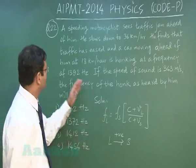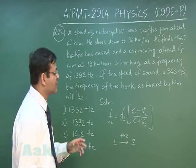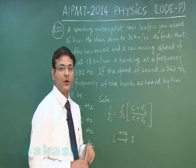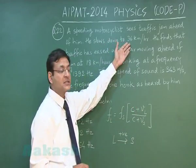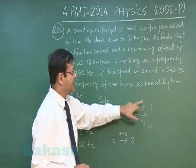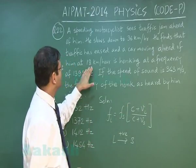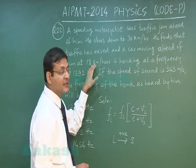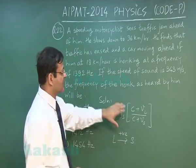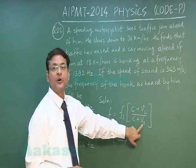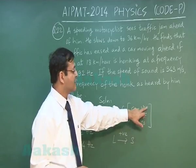Here you see fs 1392 will be substituted, for c you will be substituting 343, vL that will be 36 kilometer per hour of motorcyclist multiplied by 5 by 18 that will be 10, and this 18 kilometer per hour, so that will be 18 times 5 by 18 that is 5 will be substituted for velocity of the source, 10 for the listener velocity.